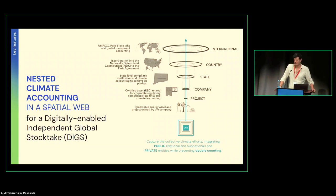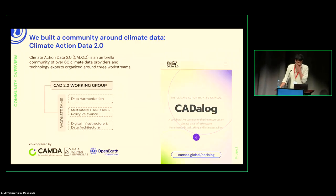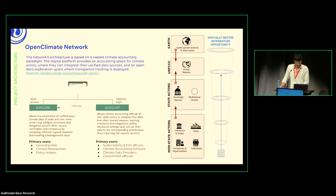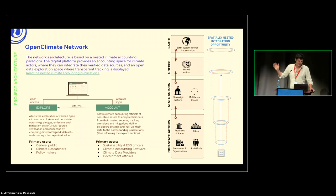We're doing what we call a digitally enabled independent global stock take. The UNFCCC global stock take takes place every five years and doesn't include subnationals or other non-state actors, which are some of the main actors that can actually pull levers to reduce emissions. So we built a working group — the Climate Action Data 2.0 working group — with three main work streams: data harmonization and standardization, use cases and policy, and one focused on digital infrastructure and architecture.